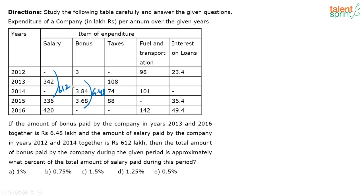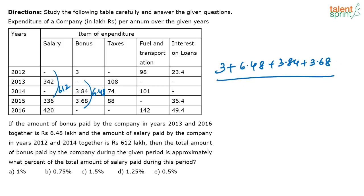So what should we find out? We have to find the ratio. You have here 6.48 plus 3 plus 3.84 plus 3.68 — that is going to be your numerator. So 3 plus 6.48 plus 3.84 plus 3.68, divided by 6.12 plus 3.42 plus 3.36 plus 4.20 — that's what they are asking us.